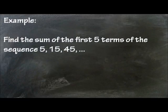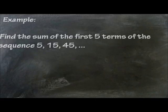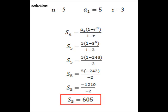Example. Find the sum of the first 5 terms of the sequence, 5, 15, 45. We use the formula and substituting the values, we get s sub 5 equals 5 times quantity 1 minus 3 raised to 5 all over 1 minus 3. We get the answer, 605.